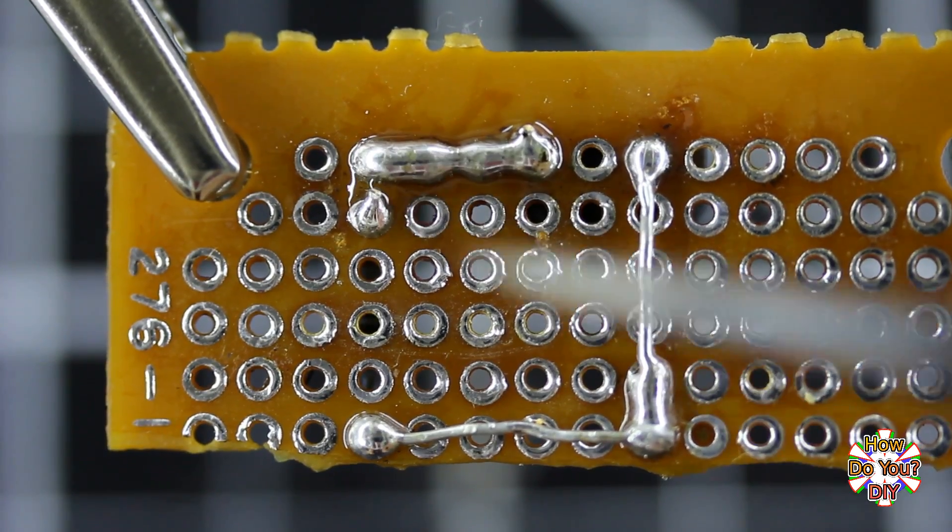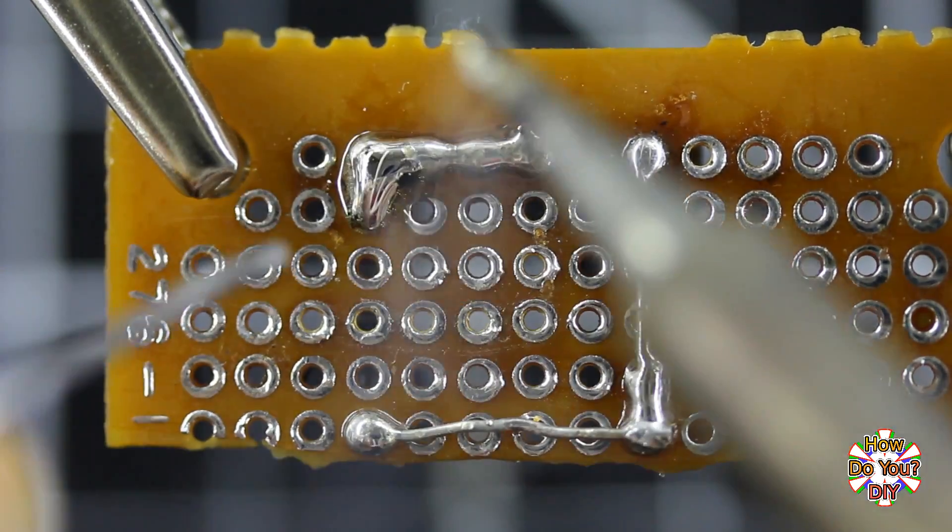If you need to make a turn in the path, wait for the fresh solder to cool down before adding the turn.